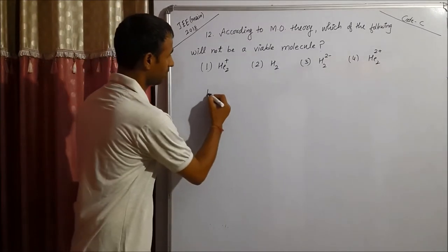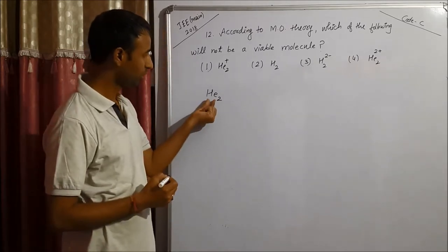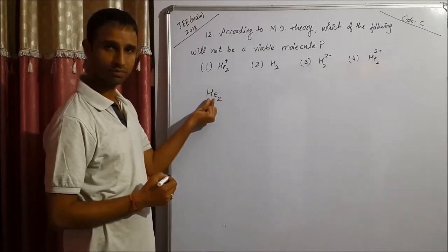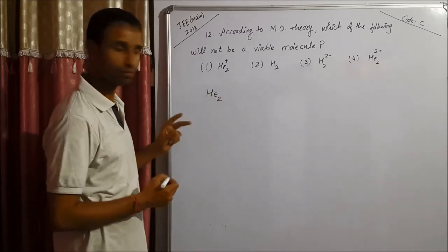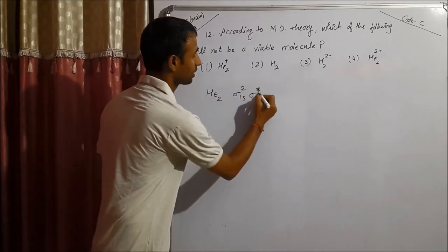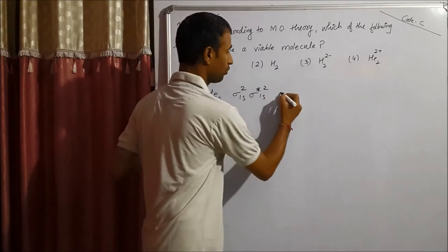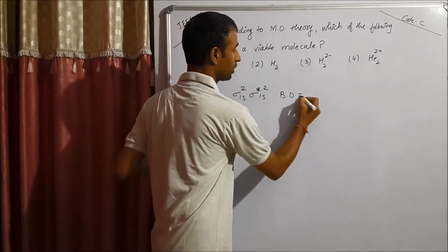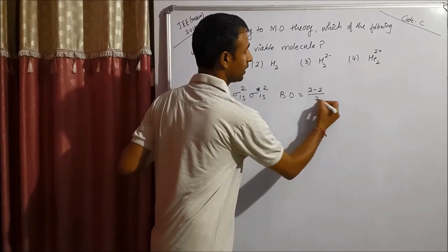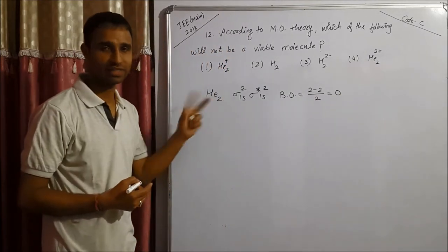If we compare He2, in He2 we have how many electrons? Two from each helium, so total four electrons. Distribution is sigma 1s2, sigma star 1s2. Helium 2 has bond order (bonding minus anti-bonding) divided by 2 equals 0, means helium 2 does not exist.